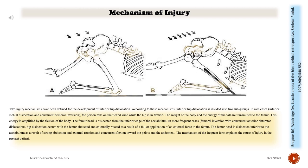In more frequent cases — femoral inversion with concurrent anterior obturator dislocation — hip dislocation occurs with the femur abducted and externally rotated as a result of a fall or application of an external force. The femoral head is dislocated inferior to the acetabulum as a result of strong abduction, external rotation, and concurrent flexion toward the pelvis and abdomen.